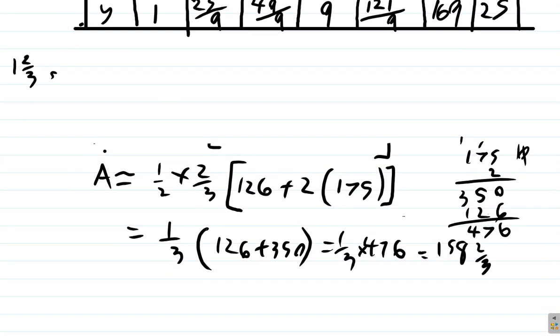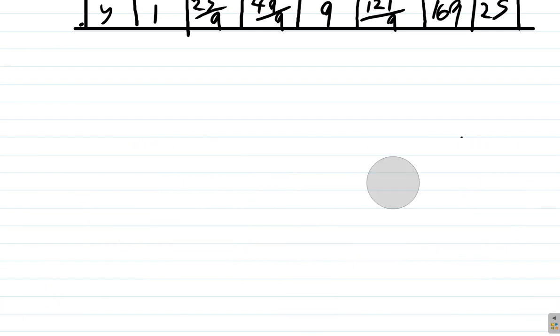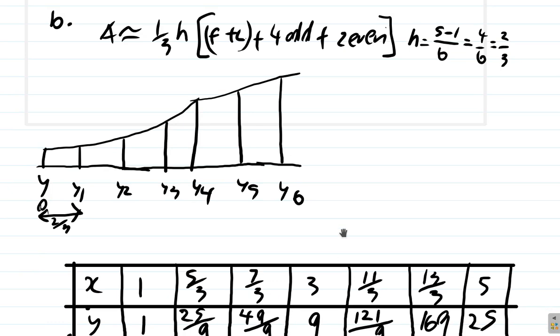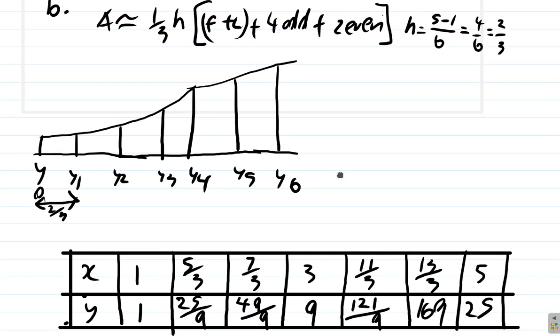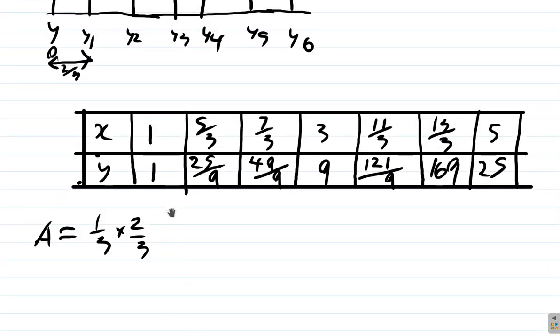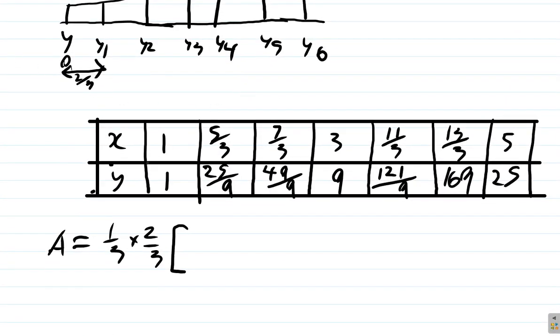Let's just erase some of the working I've done before. Now, here, Simpson's rule now. So 1 third H. The area is approximately equal to 1 third times the height, which is 2 thirds times it. I'll use square brackets here. First plus last. The first ordinate for y is 1 plus the last one is 25.